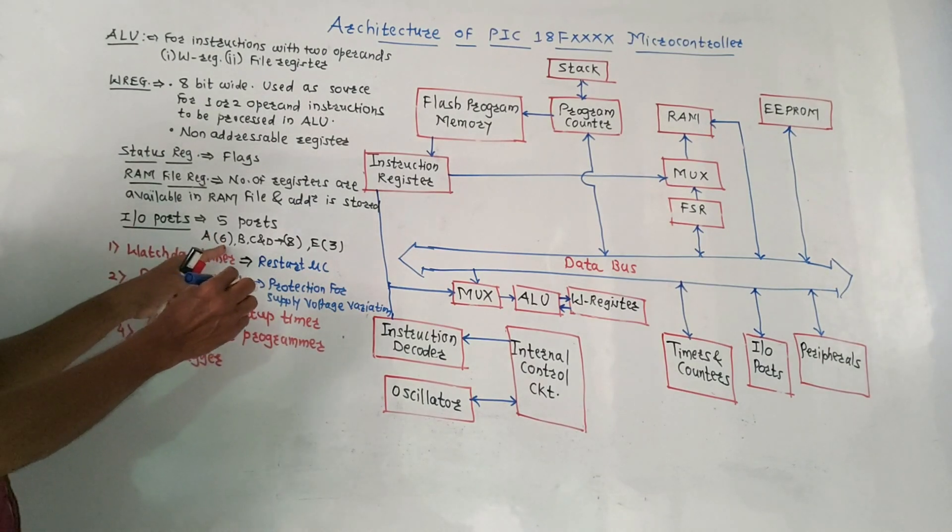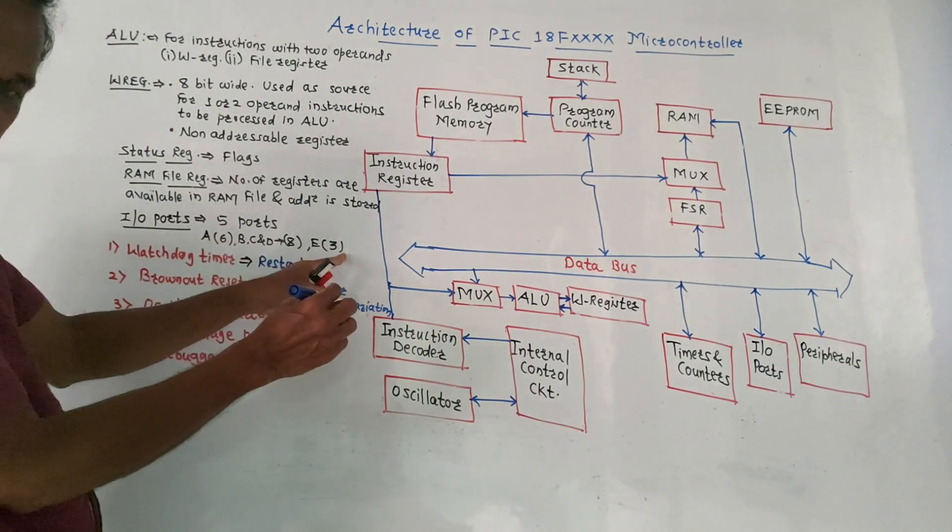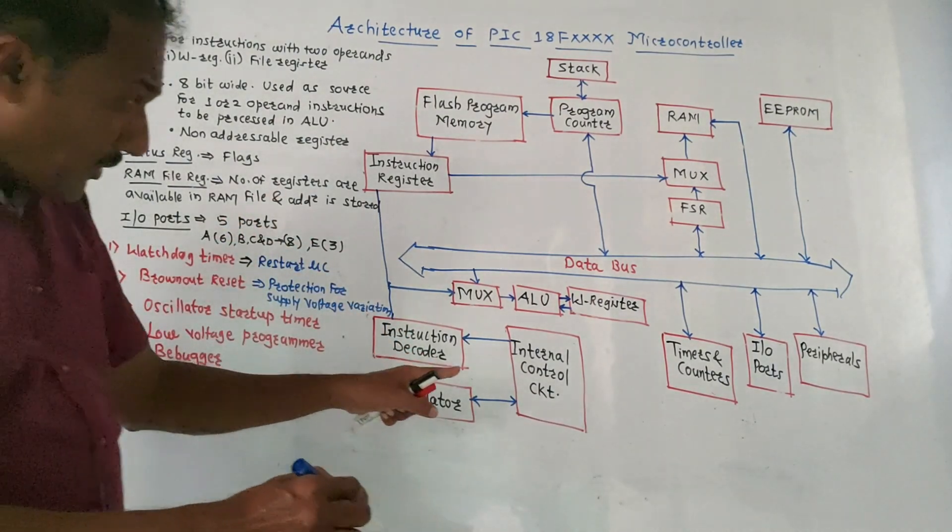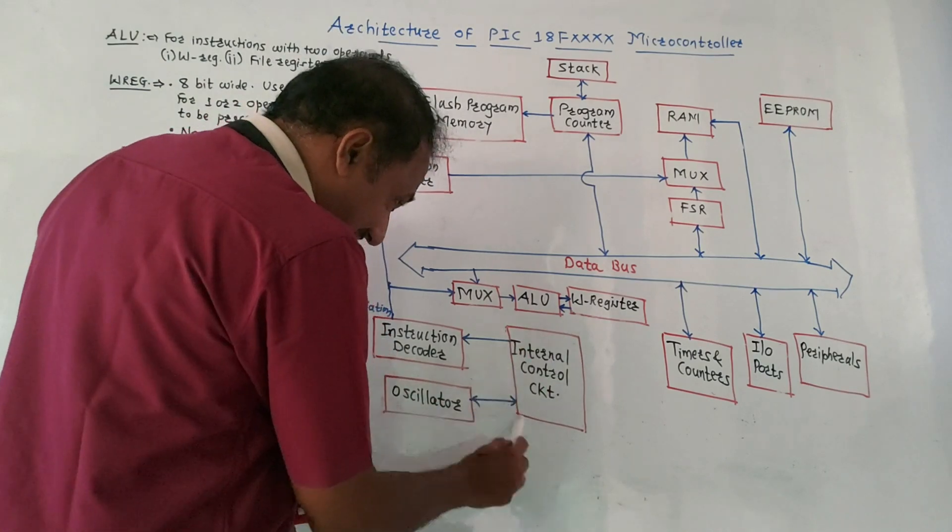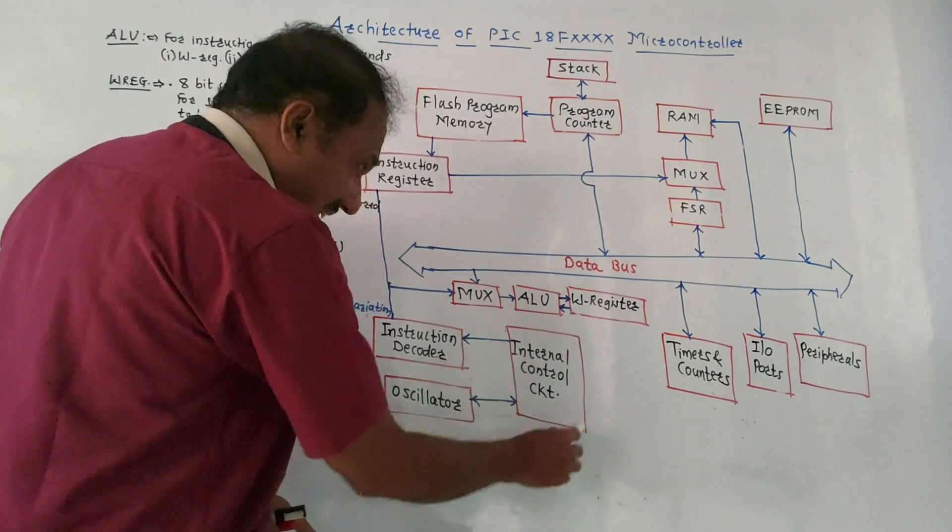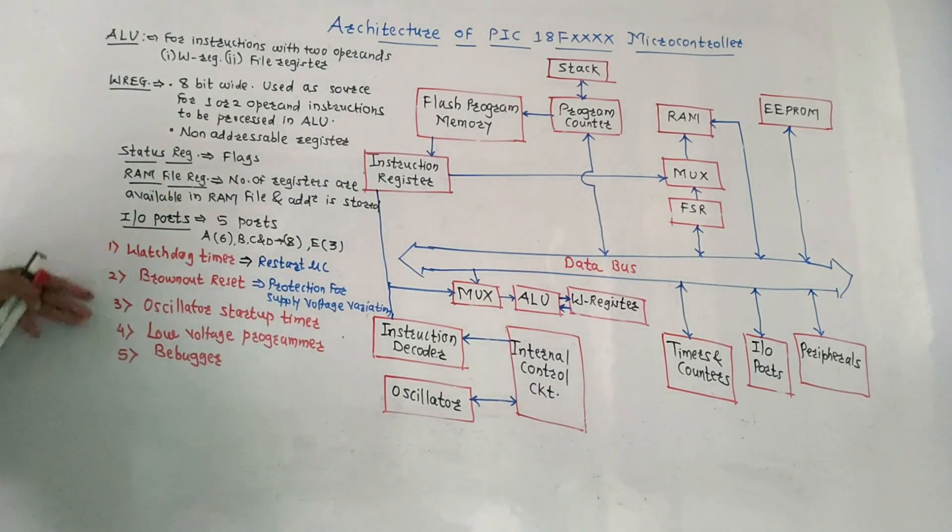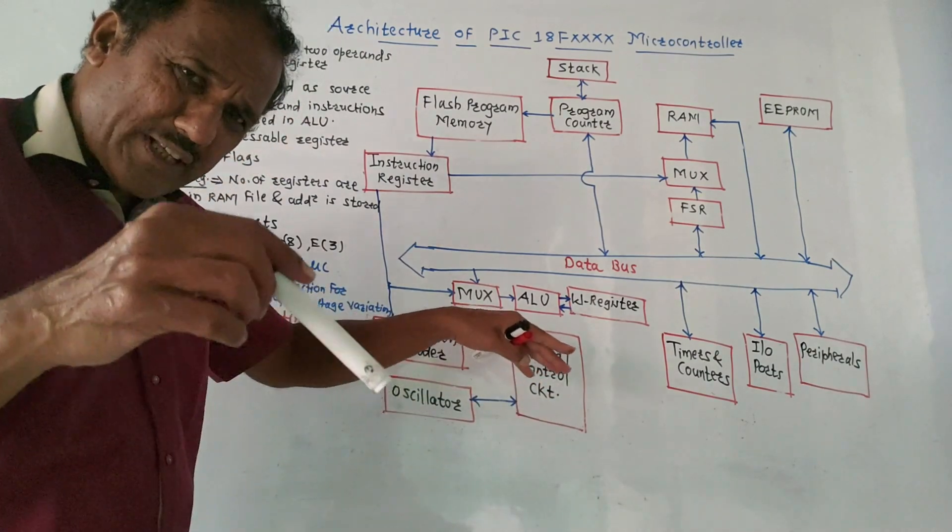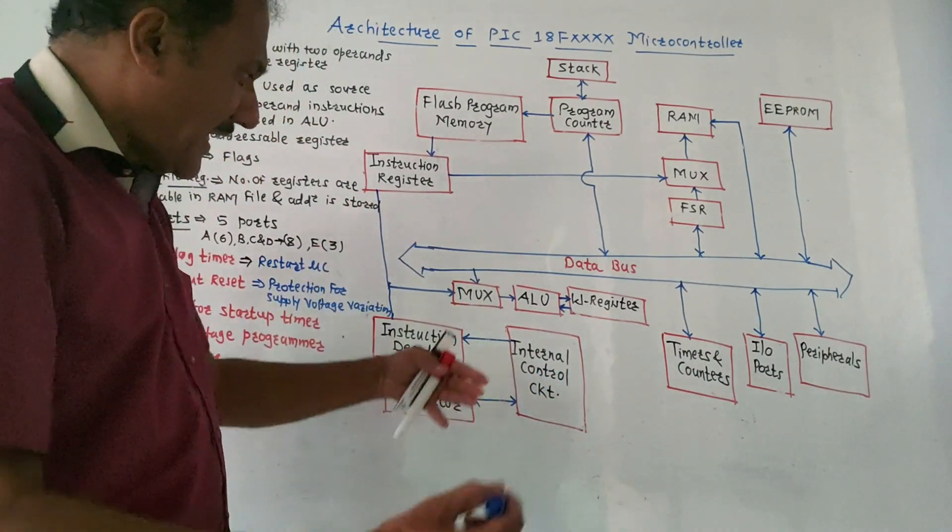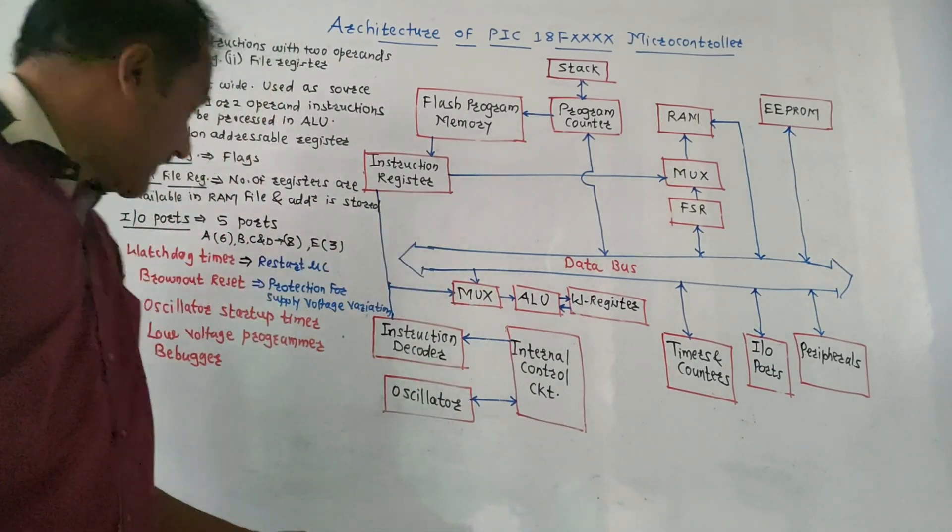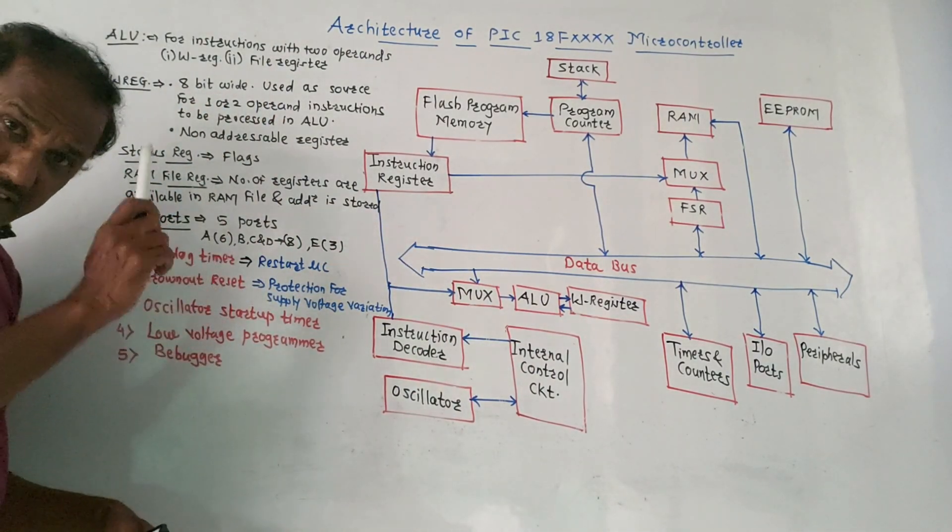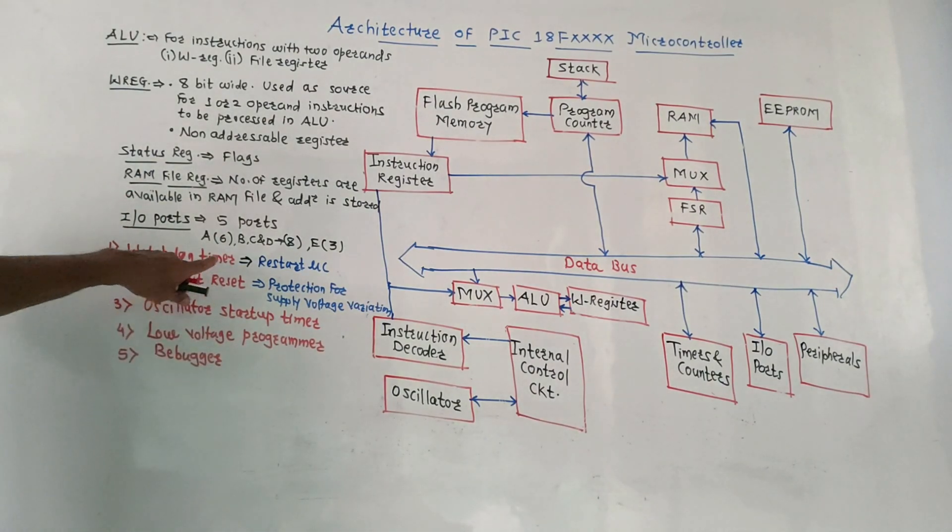Port A will be having 6 bits, then B, C, D have 8 bits, and E will be having 3 bits. Important part is internal control circuit. First is watchdog timer, which provides external timing circuitry and control signals. If any malfunctioning is there, it is used to restart the microcontroller.